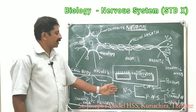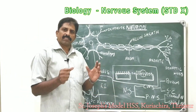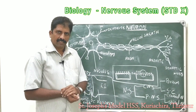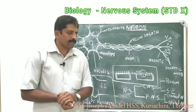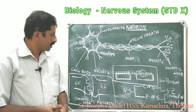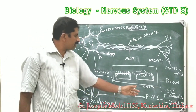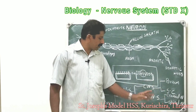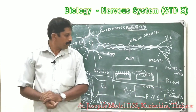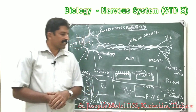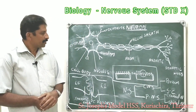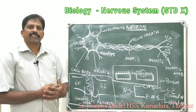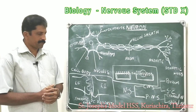To summarize the classification: the nervous system is classified into two major sections — the central nervous system and the peripheral nervous system. The central nervous system consists of the brain and spinal cord. The peripheral nervous system consists of cranial nerves and spinal nerves, with 12 pairs of cranial nerves and 31 pairs of spinal nerves.